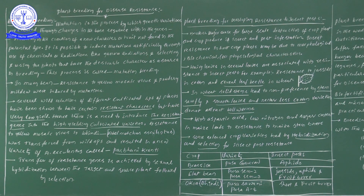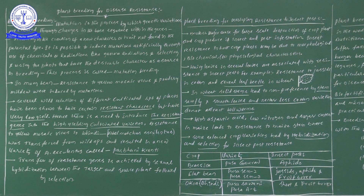In mutational breeding, we can bring mutations by using chemicals as well as gamma radiations. By using these chemicals or gamma radiations, new characters or traits not present in the parents can be brought forward. This moong bean variety was induced by mutations and shows resistance to yellow mosaic virus and powdery mildew. These points are important for examinations.